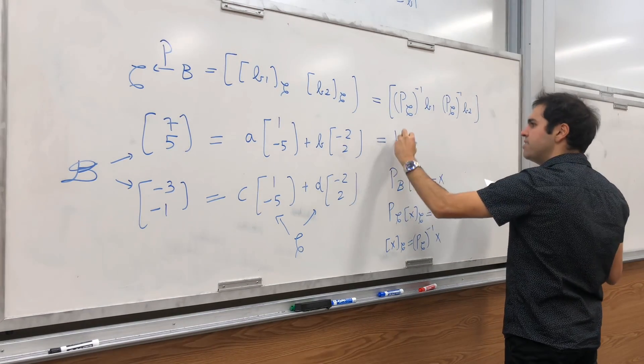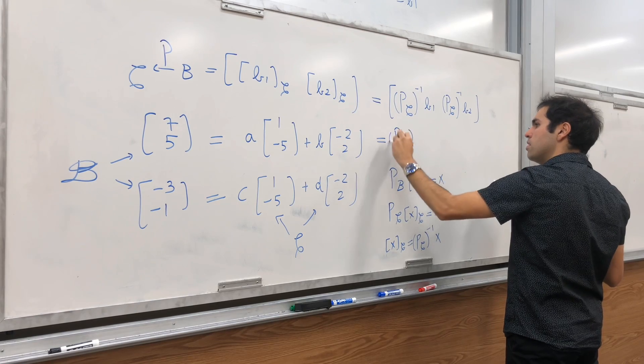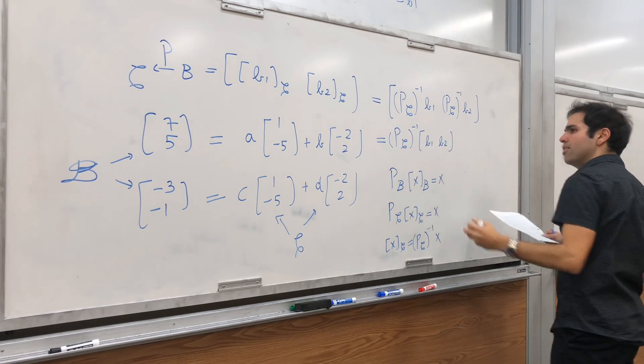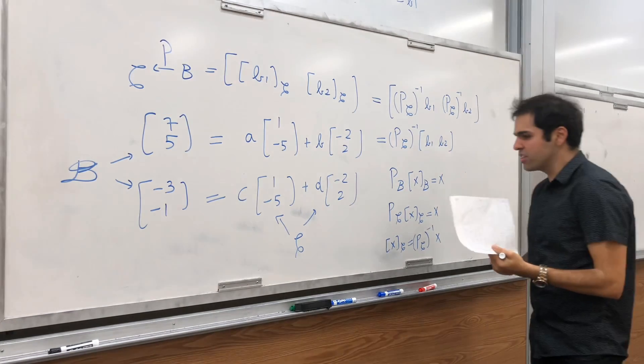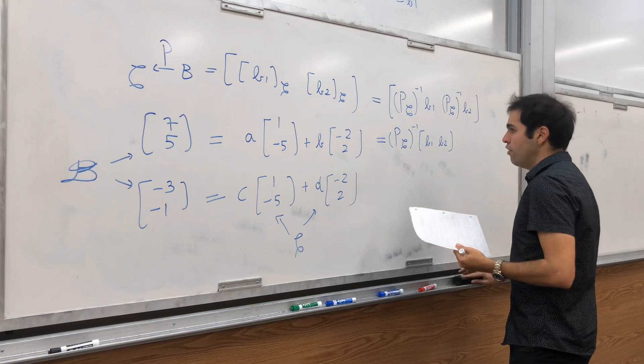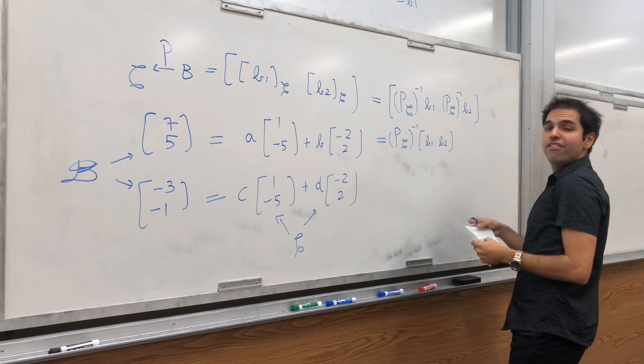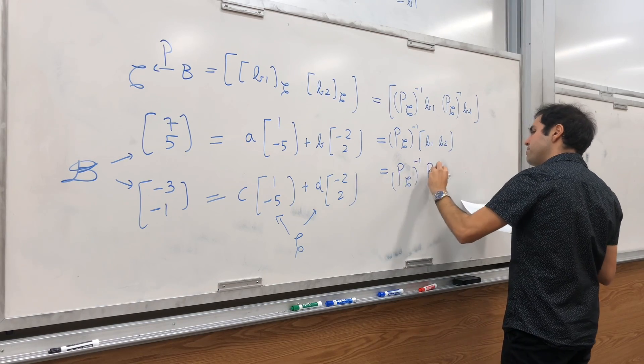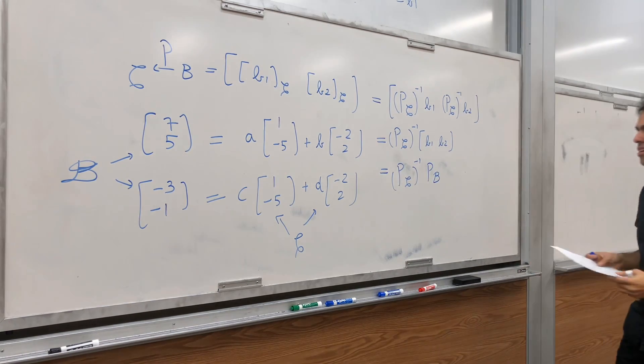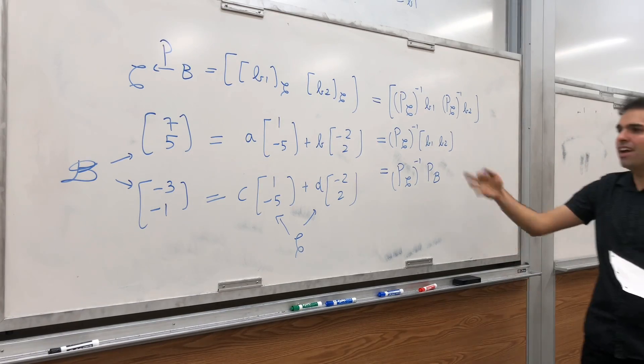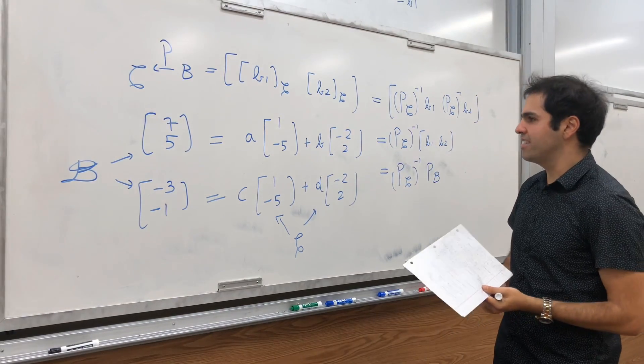you can just factor out PC inverse of B1 and B2. And, all this becomes is just PC inverse of PB. Because, that's just the definition of the matrix PB. PC inverse PB. So, and indeed,